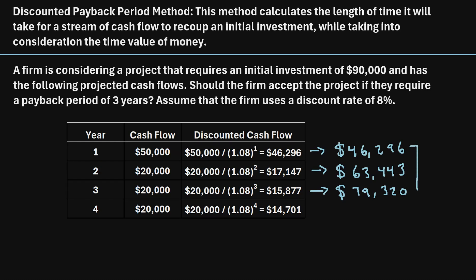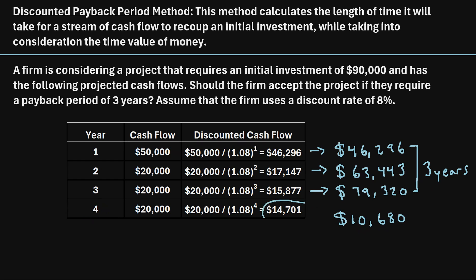During these three years, we've recouped a total of $79,320. The remaining amount needed to reach $90,000 is calculated as $90,000 minus $79,320, which equals $10,680. So after three years, we still need $10,680 more. We know that in year four we're projected to make $14,701. To figure out how long it will take to earn this extra $10,680, we divide $10,680 by the total amount expected in year four, giving us 0.726.